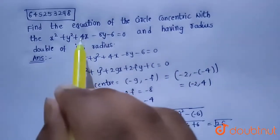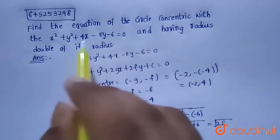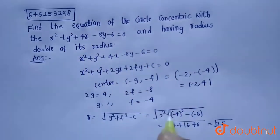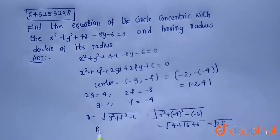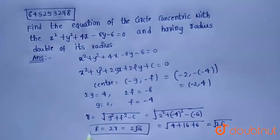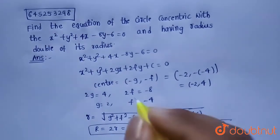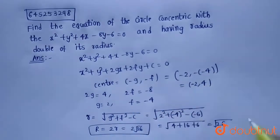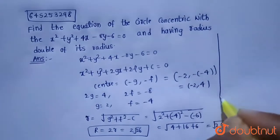The required circle has double the radius, so capital R = 2r = 2√26. We now have both the center (−2, 4) and the radius R = 2√26. Let's write the circle equation.